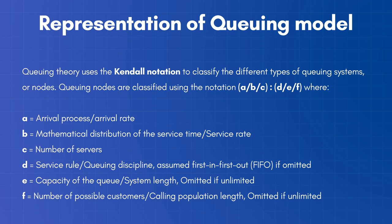A is the arrival process or arrival rate, B is the mathematical distribution of the service time or service rate, C is the number of servers, D is the service rule or queuing discipline, E is the capacity of the queue or system length, and F is the number of possible customers.